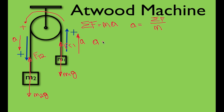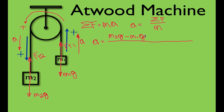The acceleration equals the sum of the forces divided by the mass. Starting with the positive forces: on the left-hand side, down is positive, so M2G is positive. On the right-hand side, up is positive, so M1G points downward and is therefore negative M1G. The tension force on M2 points up but down is positive on the left, so it's minus FT2. The tension force on M1 points up and up is positive on the right, so it's plus FT1.